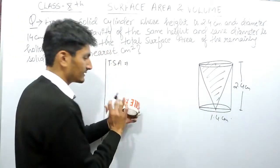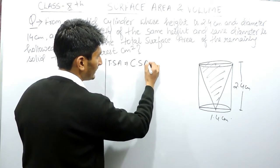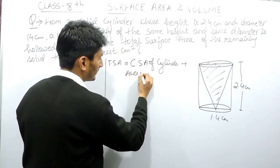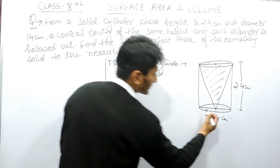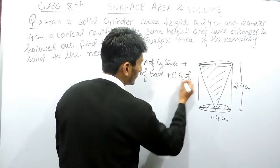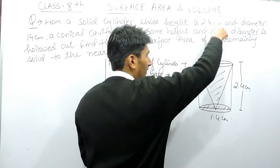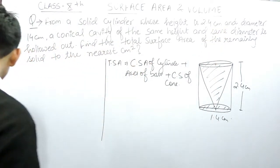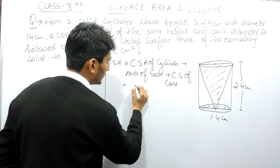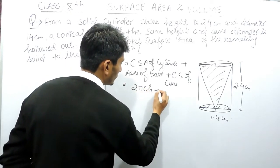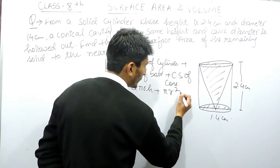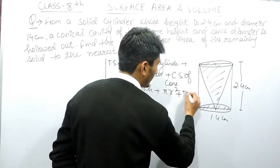So the total surface area equals the curved surface area of the cylinder, plus the area of the base, plus the curved surface area of the cone. The formula is: curved surface area of cylinder = 2πrh, area of base = πr², and curved surface area of cone = πrl. We can take πr as common from all three terms, giving: πr(2h + r + l).